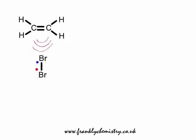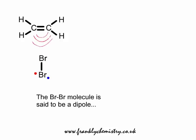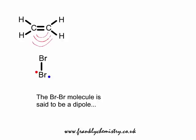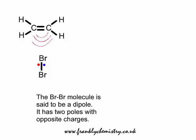The ethene molecule initially polarizes the Br2 molecule, creating a delta plus, delta minus end, and then the delta plus end is attracted in. So the Br2 molecule is said to be a dipole — literally two poles, opposite ends — a delta plus at the top and a delta minus at the bottom.